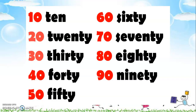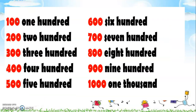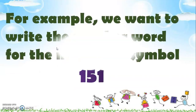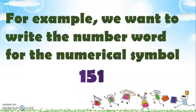To make it easier for us to count and write numbers, we only need to remember our skip counting by ten: ten, twenty, thirty, forty, fifty, sixty, seventy, eighty, and ninety. And of course we have the hundreds: one hundred, two hundred, three hundred, four hundred, five hundred, six hundred, seven hundred, eight hundred, nine hundred, and one thousand.